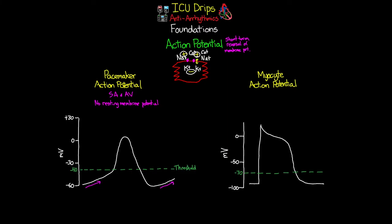This spontaneous rise from negative 60 millivolts to the threshold of negative 40 millivolts is what we call phase four, also known as the pacemaker potential phase. This happens at a consistent rate, which is where we get automaticity from. When we hit the threshold of negative 40 millivolts, calcium channels open, allowing an influx of calcium into the cell until we reach about positive 10 millivolts. This rising or depolarizing phase is called phase zero.